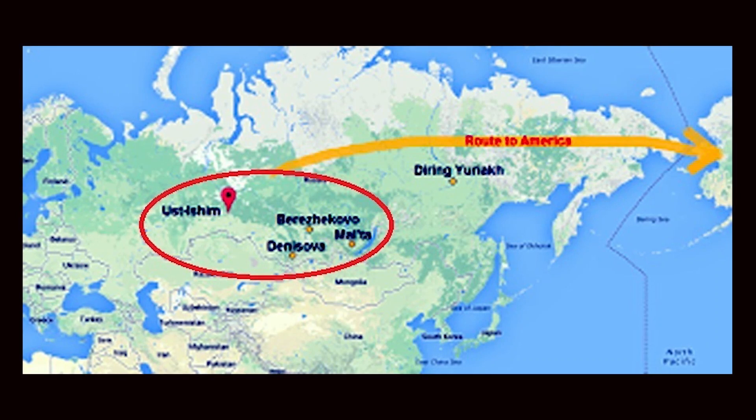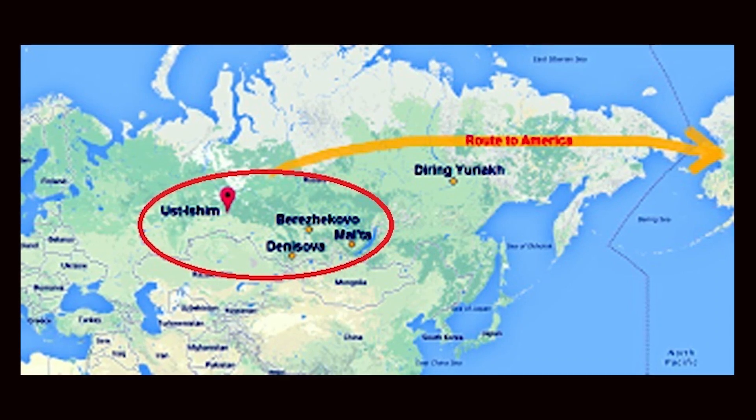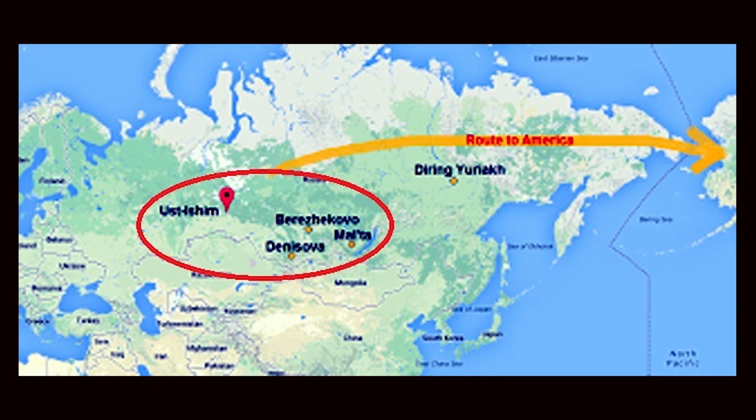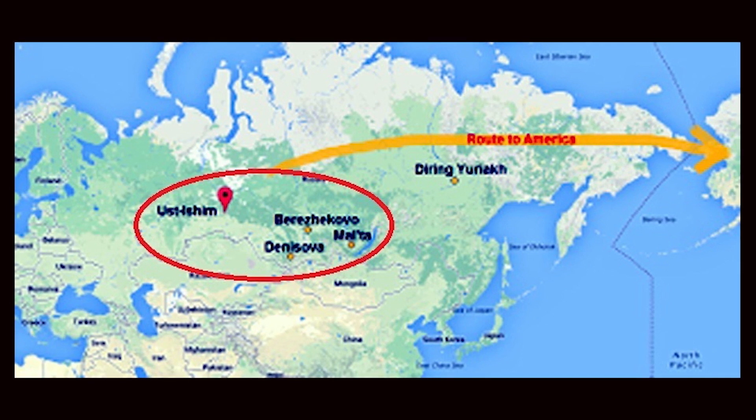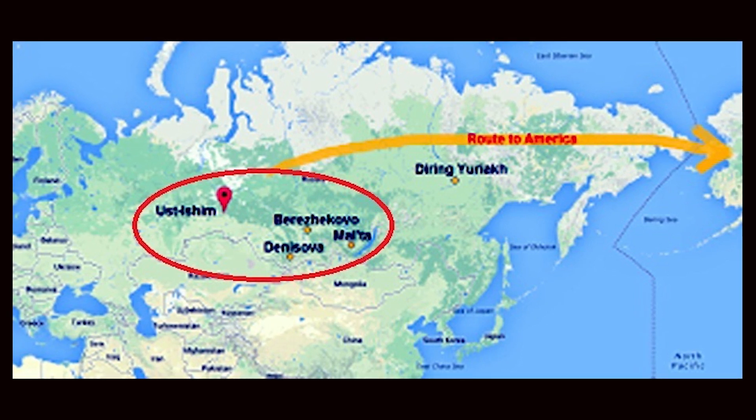There have been migrations to America at different times and in different periods. The first was 25 to 30,000 years before Christ, and the other was 10 to 13,000 years before Christ — one at the beginning of the ice age and the other after it ended. The people who lived in the region marked in red on this map went east, first to Alaska, and then spread across the entire American continent.